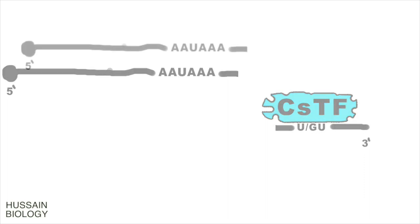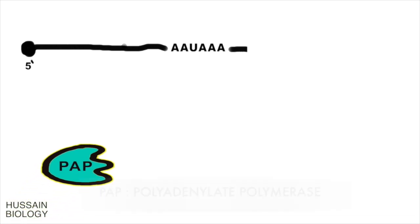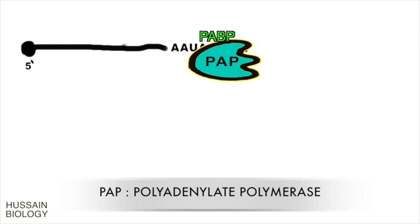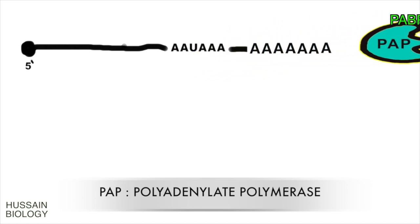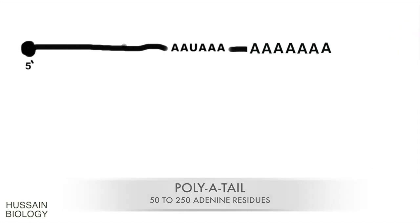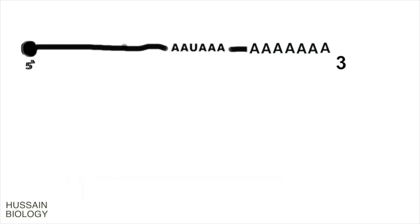Now we have the 3' end without adenine residues. To add the adenine residues, we have PAP — poly A polymerase enzyme — aided by PABP. Once PABP binds, the polymerase starts catalyzing the incorporation of adenine residues to the 3' end of the mRNA, thus forming the poly A tail. The length of the poly A tail fluctuates between 50 to 250 nucleotides long.